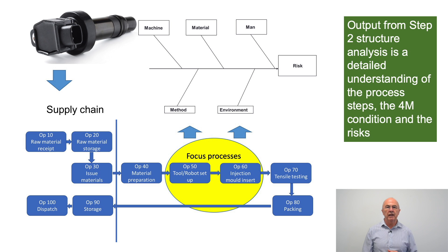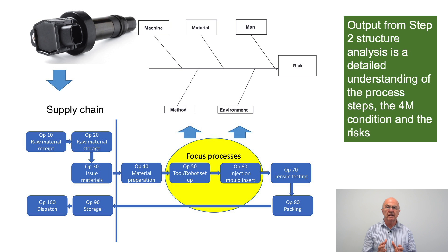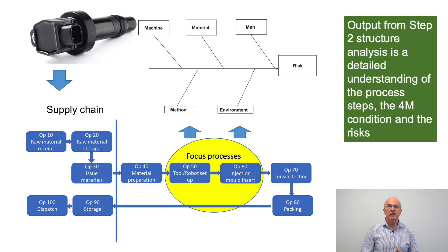As a reminder, what did we do in step two, structure analysis? We looked at a particular process step we wanted to focus on, identified what we are trying to produce as the finished component, what process step we are focusing on, and what the potential 4M influences are on that process step. That gave us the background to go into step three.